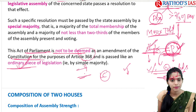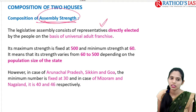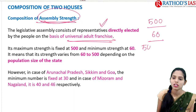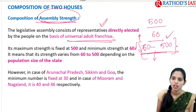Now let us see the composition of the two houses. If you are talking about the composition of the Legislative Assembly, these people are mainly directly elected by the people on the basis of universal adult franchise. The maximum strength is 500 and the minimum is 60, so the strength ranges from 60 to 500 members. However, based on population it may increase or decrease. Some states have less than 60 — for example, Arunachal Pradesh, Goa, Sikkim, Mizoram, Nagaland, etc.